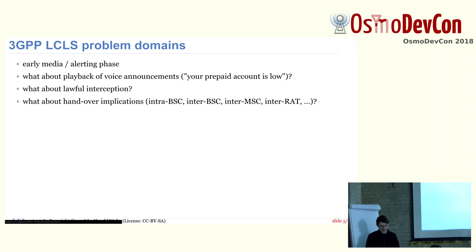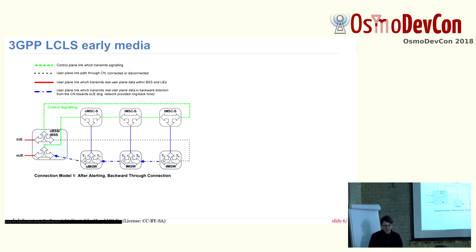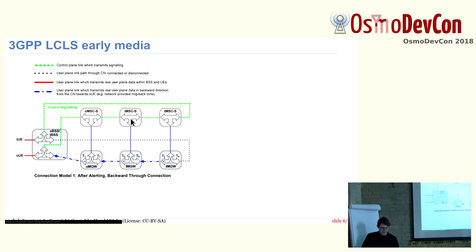So there are some problem areas that need to be resolved in Local Call Local Switch. Early media basically looks like this — again a diagram where the green indicates the control plane that goes through all the MSCs. Here we have three MSCs in the chain: the OMSC for the originating side, the TMSC for the terminating side, and the I-MSC for interworking in the center. What they put in is a switch in the voice plane in the BSC or in the media gateway next to the BSC — it says it's in the BSS, so it can be implemented wherever. And basically, you can establish the signaling this way, but there's this switch here, and the early media comes from the MSC.